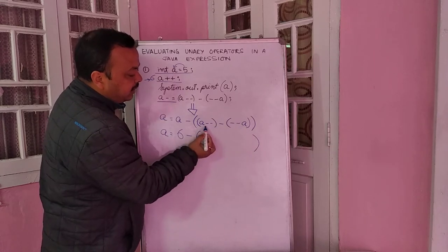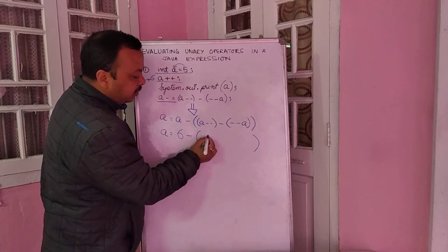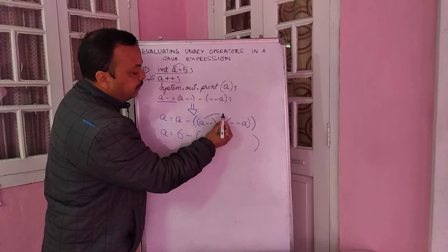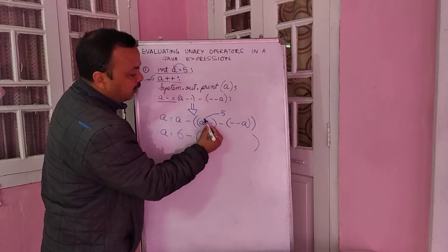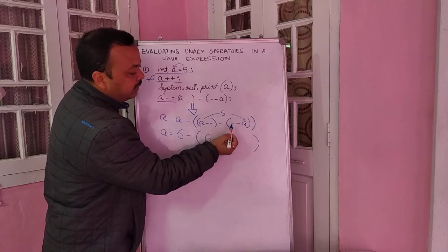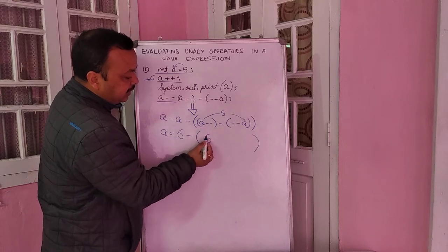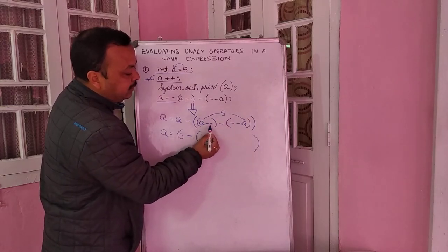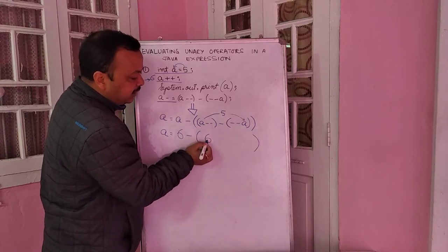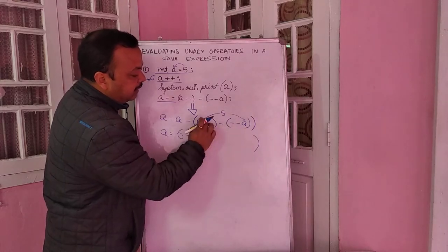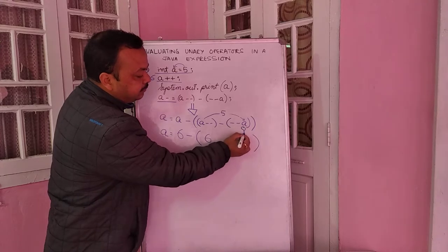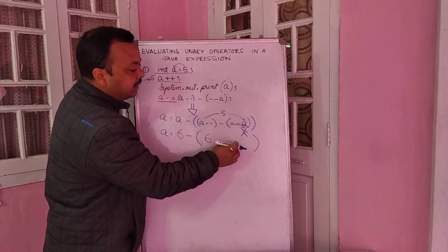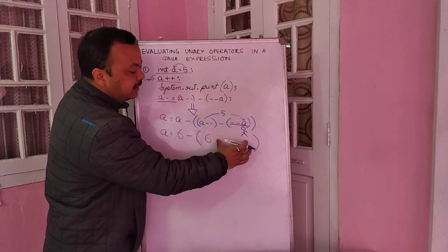This is a post-decrement, which means the current value will be used here — that is 6. But before evaluating the next expression, a has already become 5. So the current value of a is 6 here, and immediately before going to the next position it has become 5. When we come to the pre-decrement expression, the current value of a is 5, but pre-decrement means first decrease the value of a then use it — so it becomes 4.